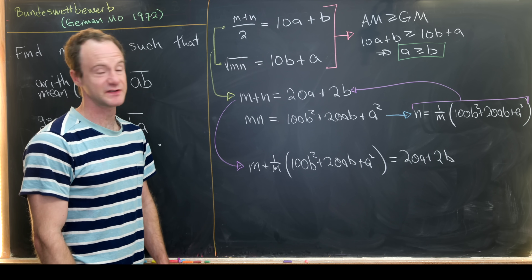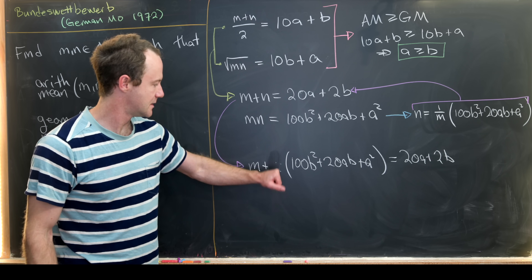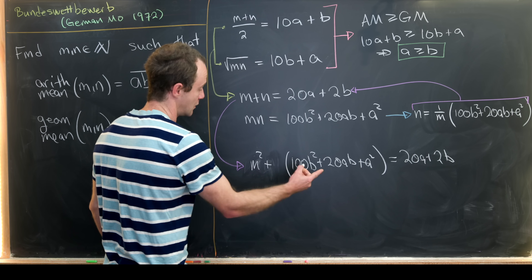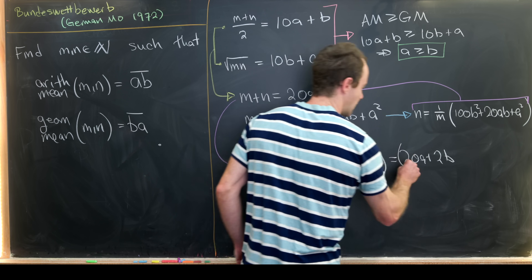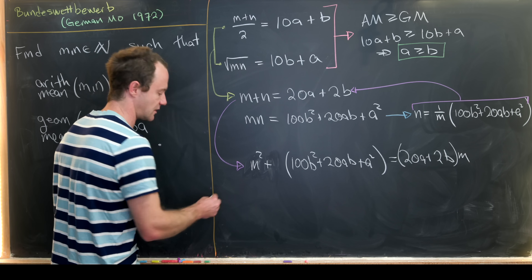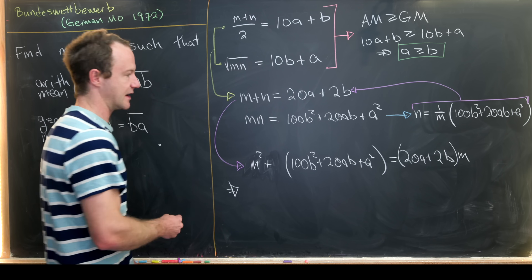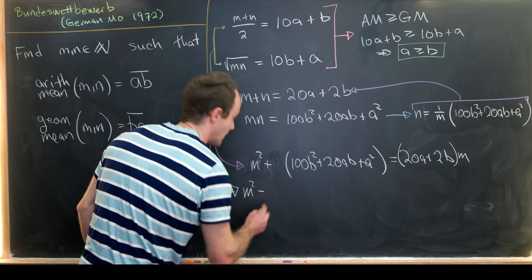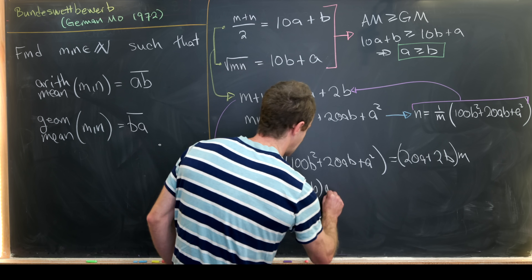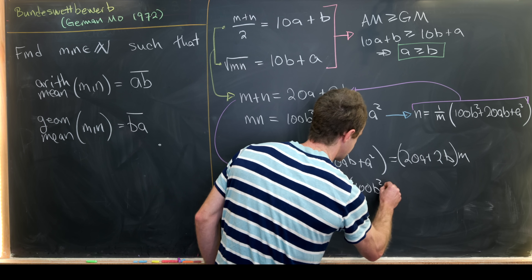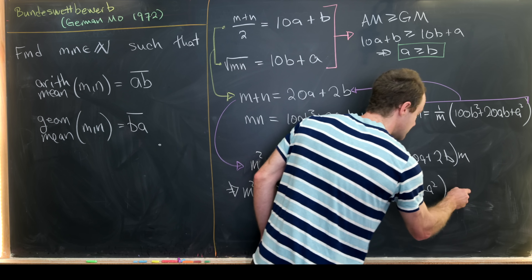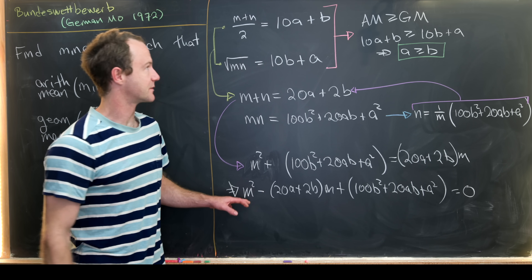Multiplying both sides by m turns this into a quadratic equation in m: m² − (20a+2b)m + (100b²+20ab+a²) = 0.